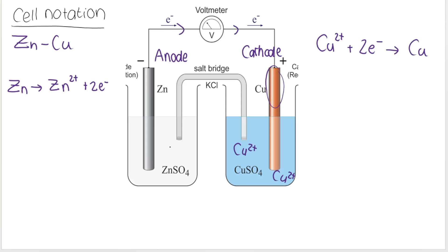Remember that in the anode half cell, the Zn²⁺ ions are already contained in the electrolyte solution. When the zinc electrode is oxidized, further Zn²⁺ ions are deposited into the solution.